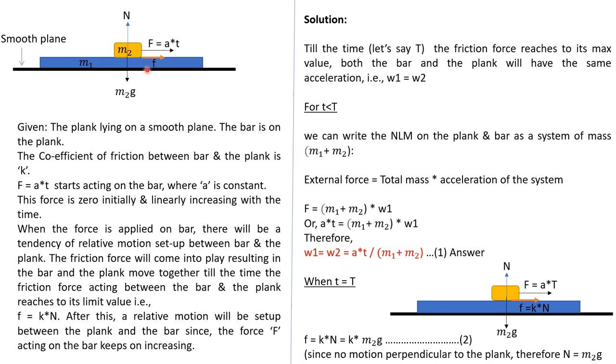So till the time the friction force reaches to its maximum value, bar and plank will move together. Because the moment the friction force rises to its limiting value, that is k times n, there will be a relative motion set up between the bar and plank, means sliding. Both of these will start sliding on each other.